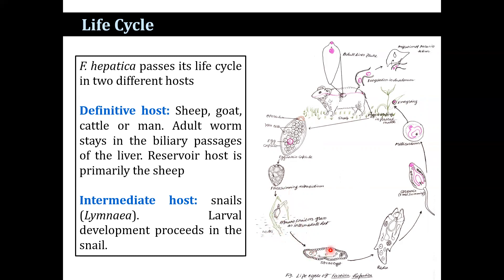Inside the lymph spaces of the snail, the miracidium goes through the following stages: sporocyst, then first and second generation of redia, and finally a short-tailed cercaria. This whole cycle takes a period of 30 to 60 days. The mature cercariae escape from the snail into the water, begin to swim, and ultimately encyst as metacercariae, which are present on the blades of grass or any kinds of aquatic vegetation.